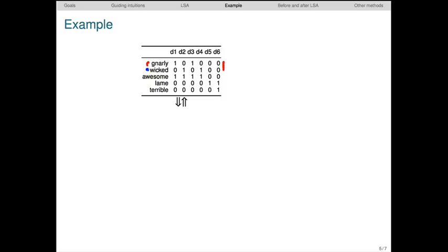As a result of this hypothesized dialect split, gnarly and wicked are unlikely to co-occur in the same document. However, they're likely to occur with similar terms, that is, other positive terms that aren't dialect-specific.